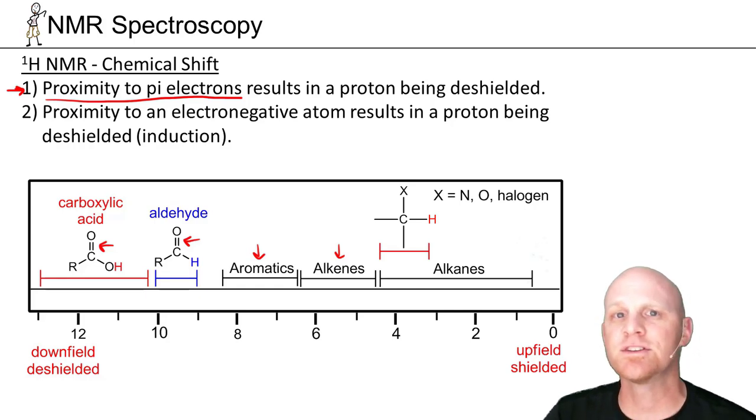So these terms shielded and deshielded are just referring to the electrons. Electrons have a negative charge and moving charges can generate their own magnetic fields, in this case in opposition to the external magnetic field you're probing the molecules with. So in this case that's what we mean by shielded: a nucleus is shielded when it has a higher electron density around it. Deshielded then would mean a lower electron density around it. And it turns out when you put pi electrons in a magnetic field their motion results in deshielding.